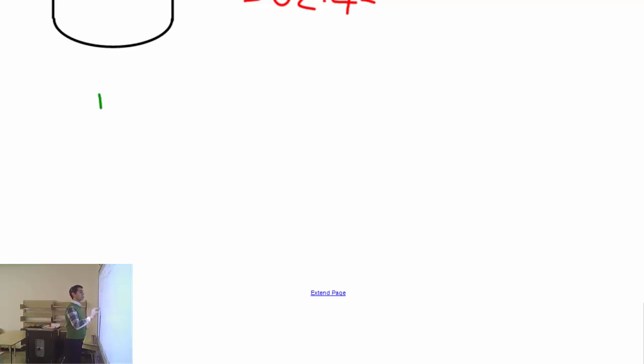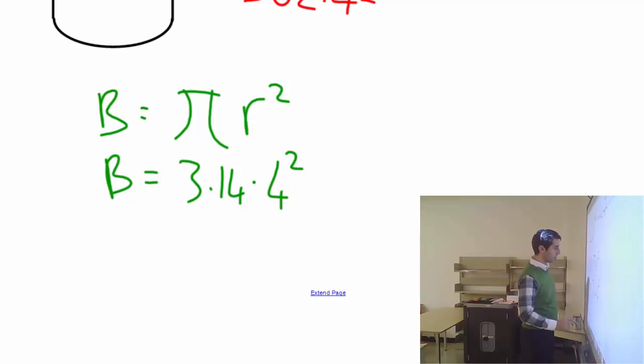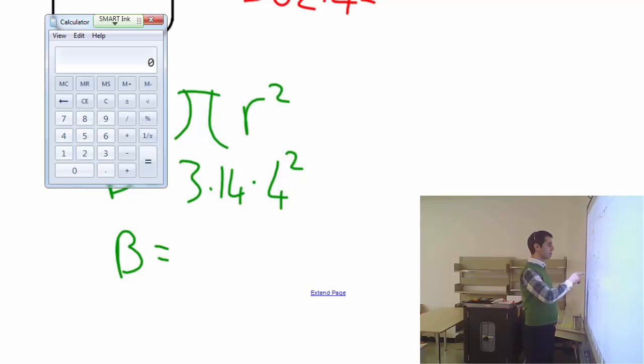Let's calculate the base area on the side. Base area - remember this is a cylinder, so the cylinder underneath has a circle. So the base area of the circle formula is pi r squared. Base area equals pi is 3.14 times r is 4 squared.